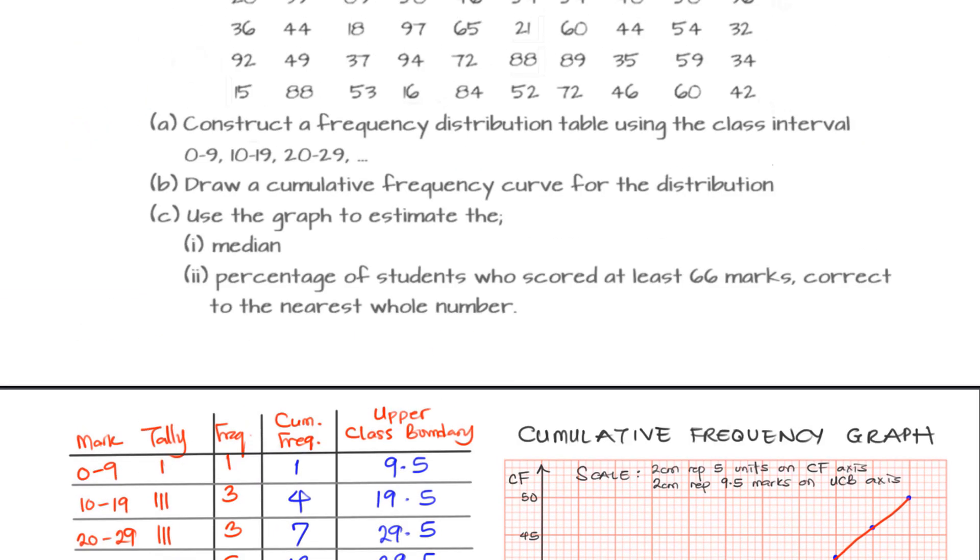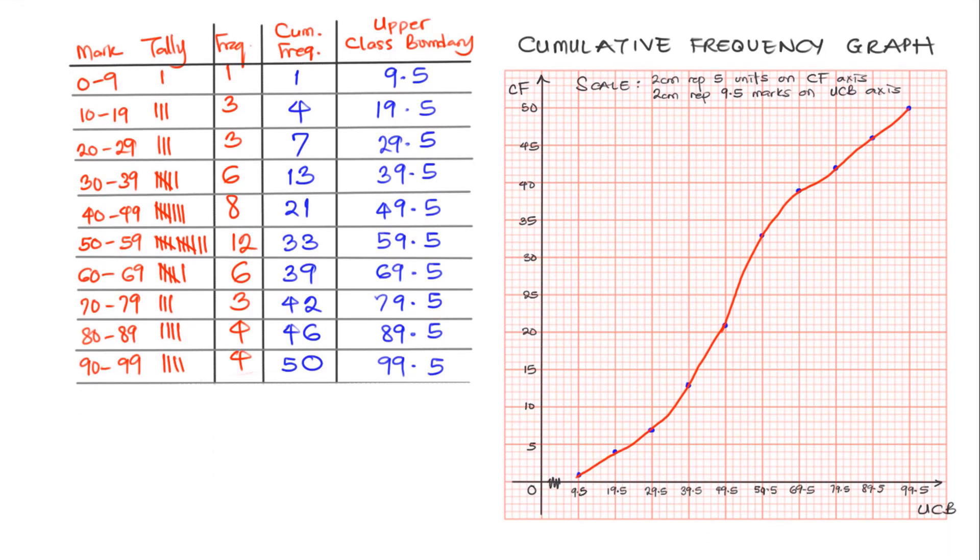The other question we have is to use the graph to find the median mark for the student. This is answer to A, this is answer to B. C and C1 to be precise, we want to find the median mark in the test. The median will have to be... now the cumulative frequency is 50, the median will have to be half of the total frequency. And that is half of 50, that is 25.